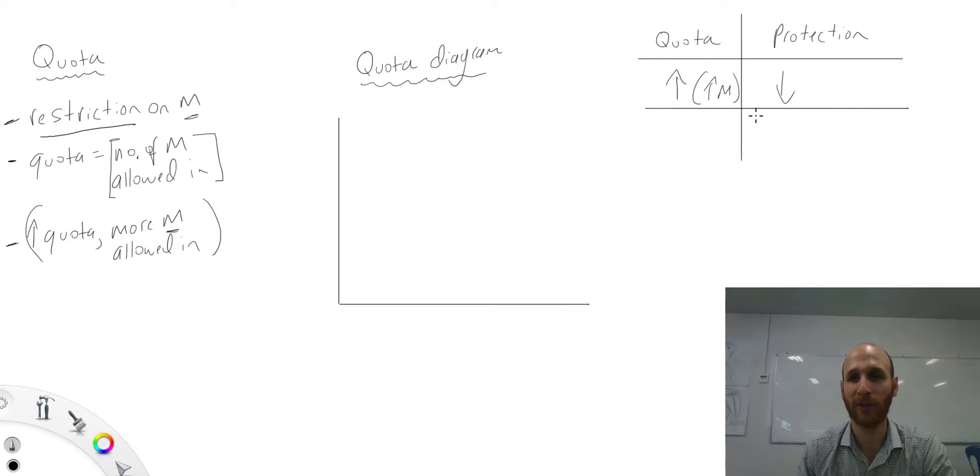which means lower protection. If I've got a lower quota, that means less imports, which means higher protection. So just be clear that this works in an inverse way. This is something that is quite often tested on HSC multiple choice questions.